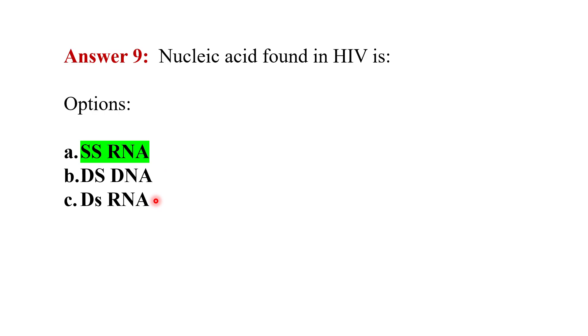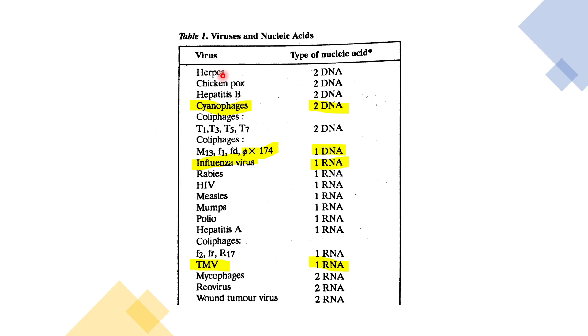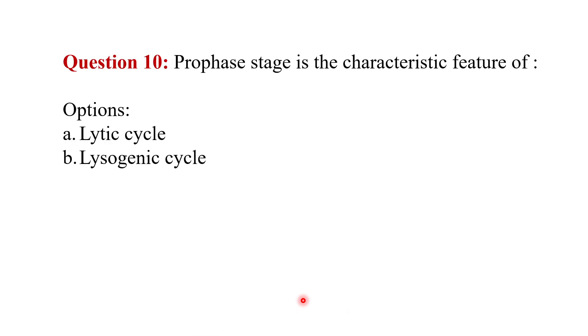Let's see this slide on viruses and the type of nucleic acid. Here are a few important viruses which I have highlighted. Cyanophage has double-stranded DNA, phi X 174 has single-stranded DNA, influenza virus has single-stranded RNA, and TMV has single-stranded RNA. These three mycophages, reovirus, and wound tumor virus have double-stranded RNA.